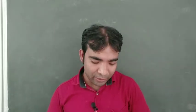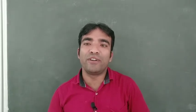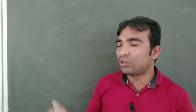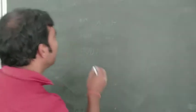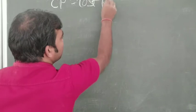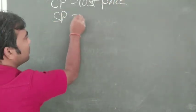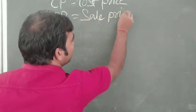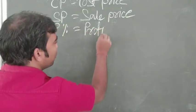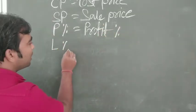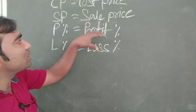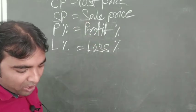Today I'll give you some shortcut tricks related to profit and loss. We will use some important terms: CP stands for cost price, SP stands for sale price, P% stands for profit percentage, and L% stands for loss percentage. We have to understand these terms because we will use them throughout.